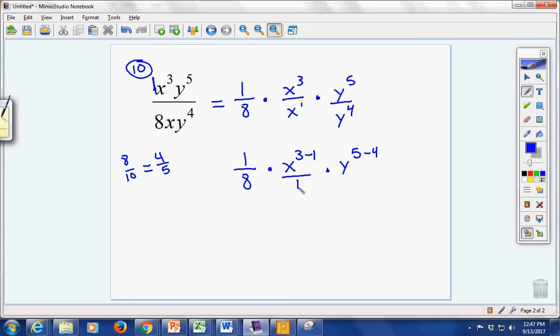So when we put this all together, I can actually put 1s underneath here. So I can multiply across the top. 1 times x to, if you left it, 3 minus 1 is fine. Or you can write it x to the second. Times y to the first over 8 times 1 times 1, which is just 8.